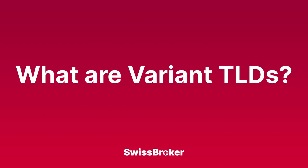What are variant TLDs? Variant TLDs are those top-level domains that are treated the same even though they technically consist of distinct characters that look the same. For example, in the Arabic or Chinese language, a variant TLD must be registered by the same entity.